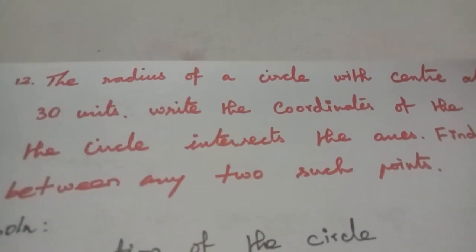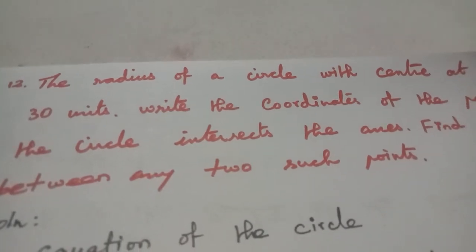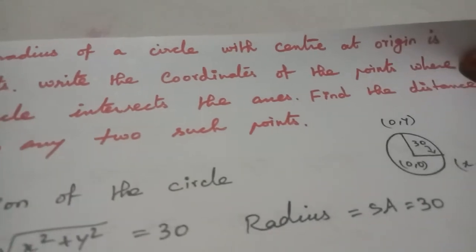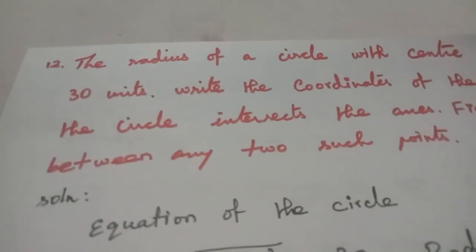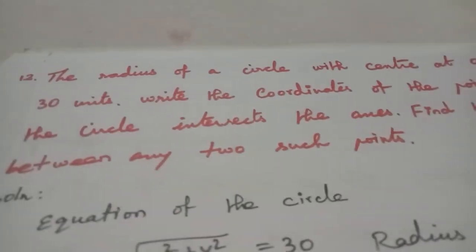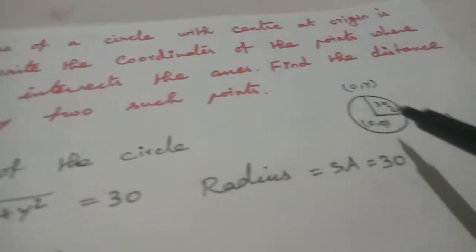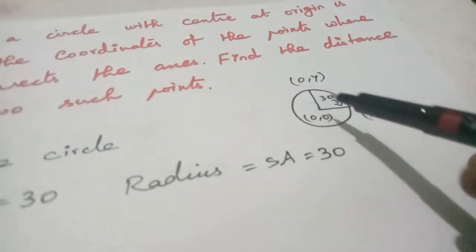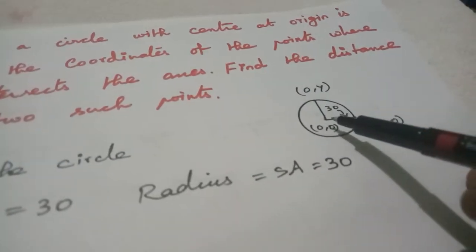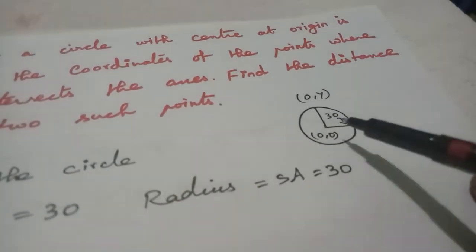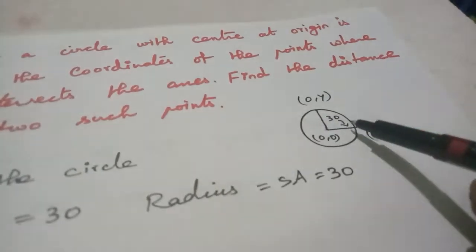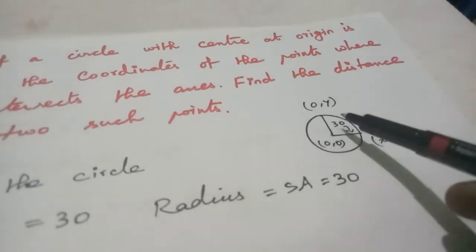Problem 12: The center of the circle is at the origin (0,0) with radius 30 units. We need to find where the circle intersects the axes. For the x-axis, the point is (x, 0), and for the y-axis, the point is (0, y). We need to find the distance between these two points.